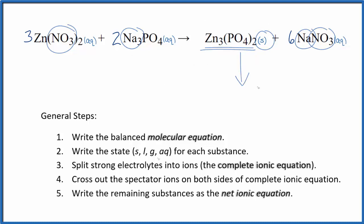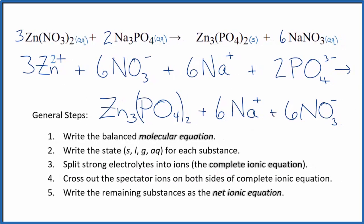Now we have our states. At this point we can split the strong electrolytes into ions for the complete ionic equation. This is the complete ionic equation. Note that we didn't split the solid apart, this zinc phosphate here, because it's a solid. We don't split that apart into its ions in net ionic equations.